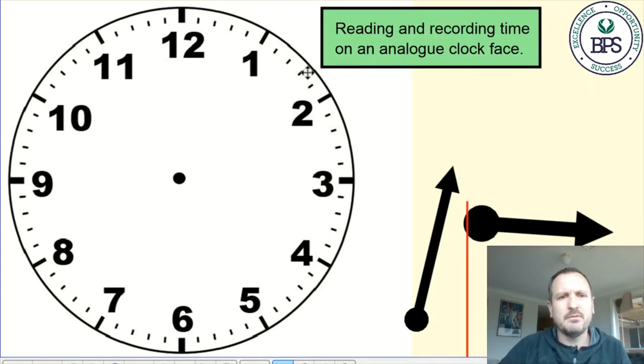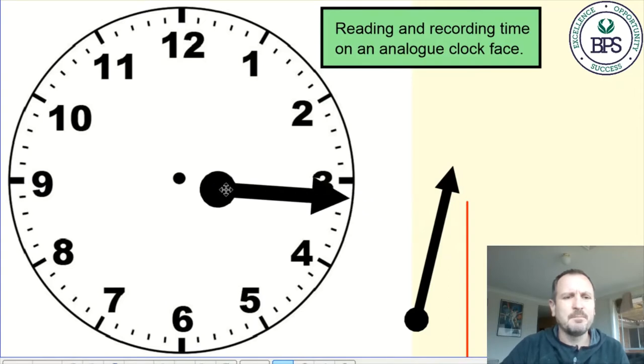Most analogue clock faces will have two or sometimes three hands. The two most important ones we're going to talk about today are the minute hand and the hour hand, and we can tell those apart by their length.